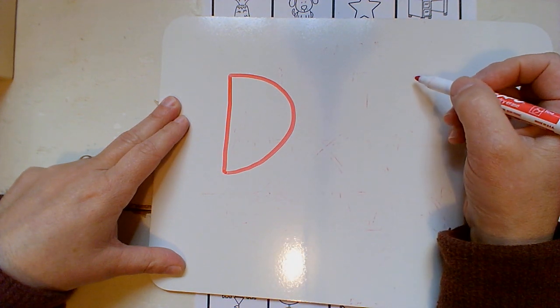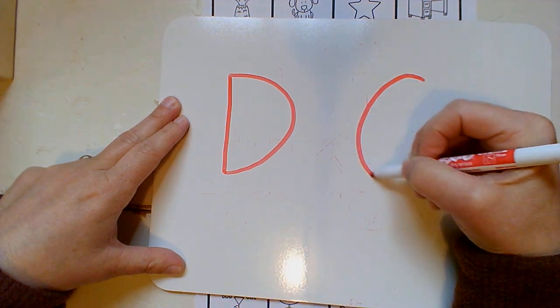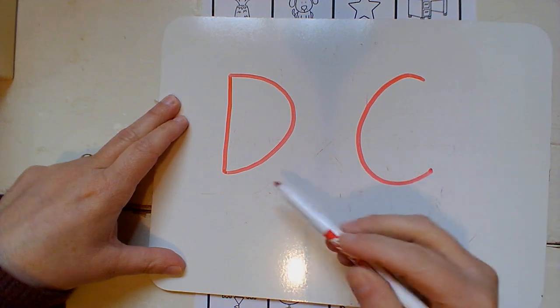And C, which says K, K, K, K, like cat. Let's make these sounds.